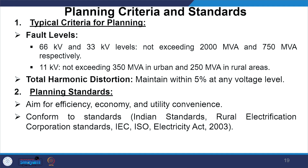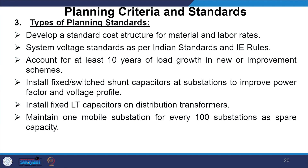For loss minimization measures, LT lines should not exceed 0.8 km; use aerial bunched cables in city areas; use improved metering with electronic meters for all consumers — this is mandatory. At 66 kV and 33 kV levels, do not exceed 2000 MVA and 750 MVA respectively to avoid failures; 11 kV should not exceed 350 MVA in urban areas and 250 MVA in rural areas. Harmonic distortion must be maintained within the 5% limit. Planning standards aim for efficiency, economy and utility convenience, conforming to Indian standards, Rural Electrification Corporation standards, IEC, and the Electricity Act 2003. Install fixed/switched shunt capacitors at substations to improve power factor and voltage profiles; install fixed LT capacitors on distribution transformers; and maintain one mobile substation for every 100 substations as spare capacity for emergencies.